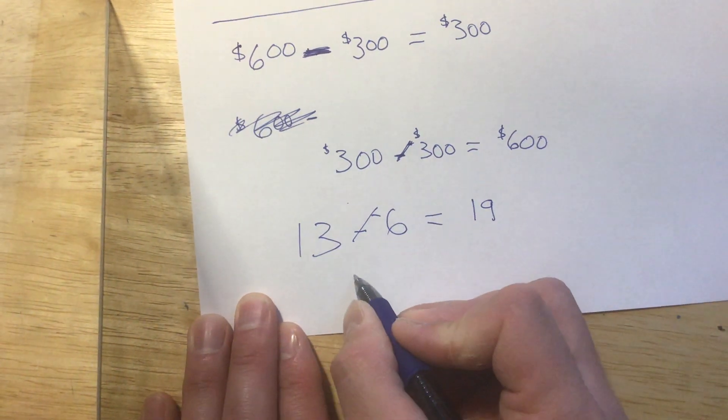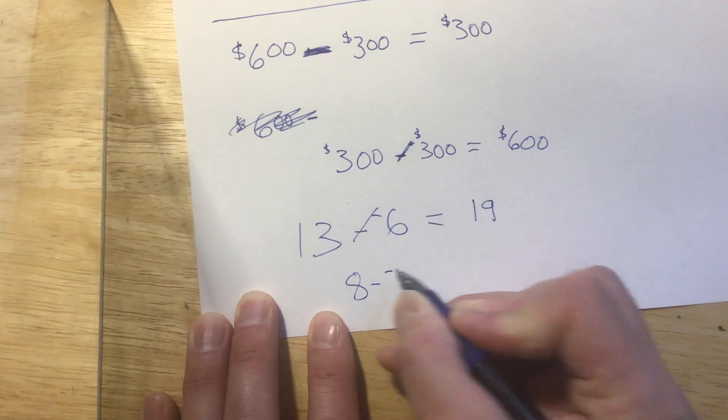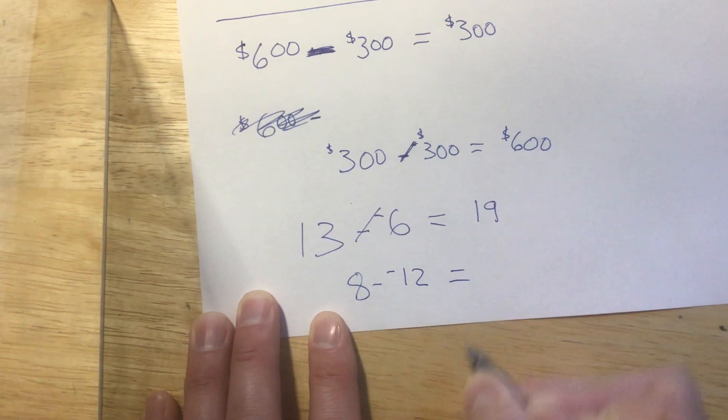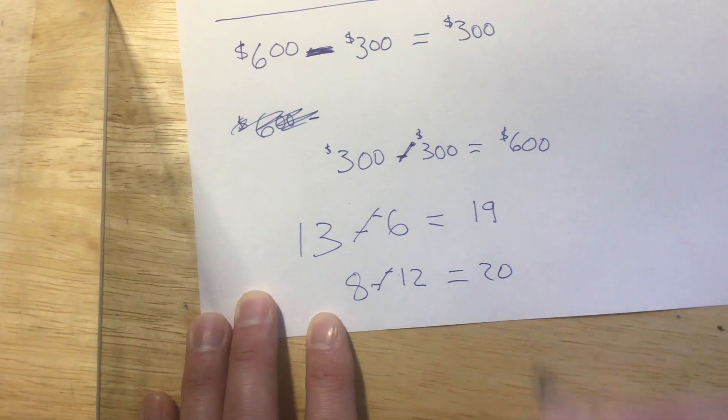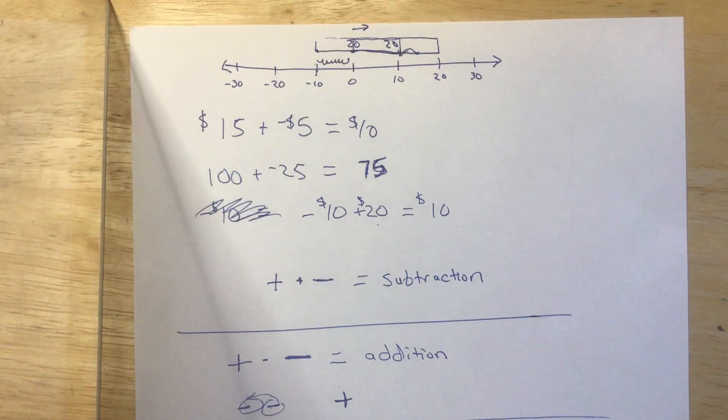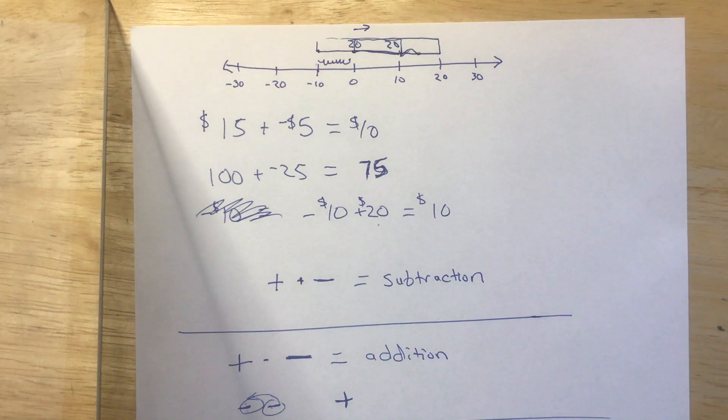Let's look at one more. 8 minus negative 12 equals, well, again, minus a negative, that's plus. 8 plus 12 is 20. Hope that helps. You can always email me to Zoom if you don't understand it or need anything checked for you. Have a great day.